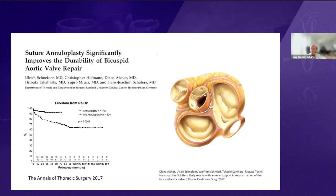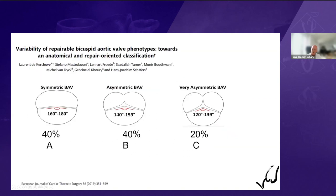What can the surgeon do about that? Annuloplasty has been mentioned, and rather than trying to implant a ring externally, we have chosen suture annuloplasty to better accommodate the different muscular extension into the sinus seen particularly in bicuspid valves. As you can see, the addition of an annuloplasty largely eliminated the failure rate after bicuspid repair.